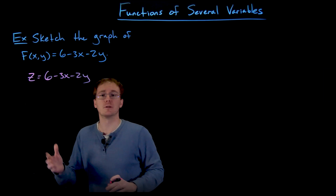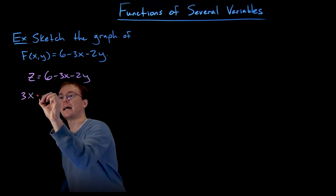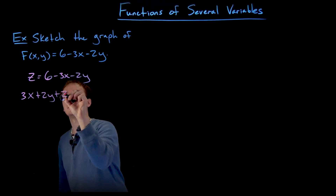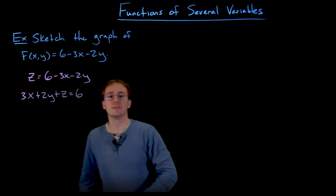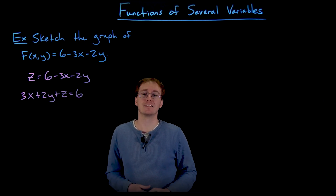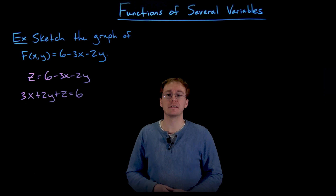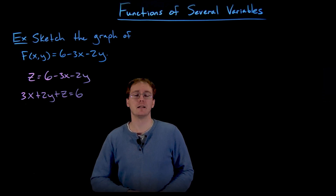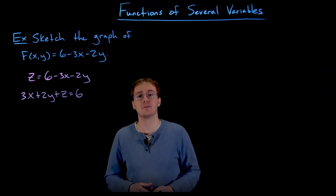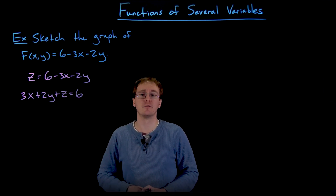We might move some things around, put all of our variables on the same side, and rewrite this as 3x plus 2y plus z is equal to 6, just to make it a little bit more recognizable as a plane. Whenever we have these linear equations involving x, y, and z, we have to remember that these are representing planes, and so our process for graphing a plane is going to be a little bit different than our process for graphing a more general two-variable function.